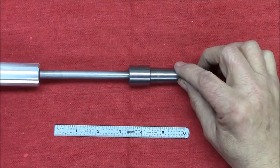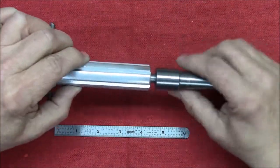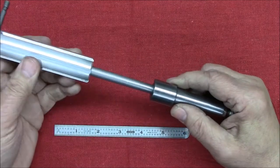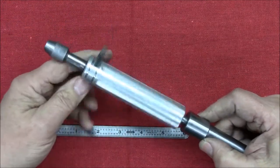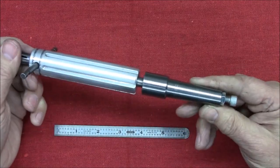And so when we put them together, we have a tool that will extend. I can have some leverage on it. And it just will pop in and out of the tailstock.